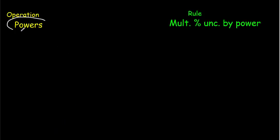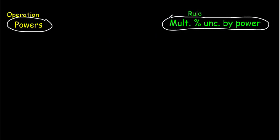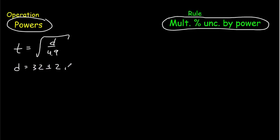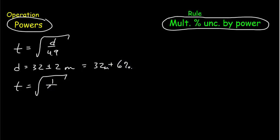My next rule applies when you've got a quantity raised to a power. The rule is simply to multiply the percentage uncertainty by the power. This equation tells us the time it takes for an object to fall straight down a distance d. So let's suppose d equals 32 plus or minus 2 meters. Converting to percentage form, that's 32 meters plus or minus 6%. Now I'm going to write my equation bringing a constant out front times d to the one-half. A square root is a power to the one-half, so this really is something raised to a power.